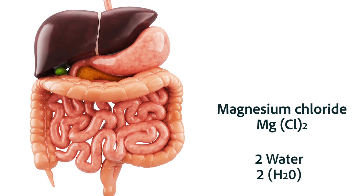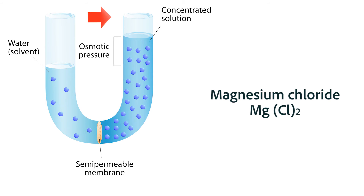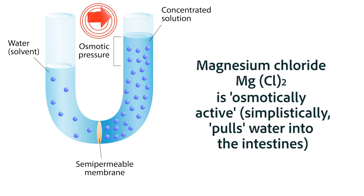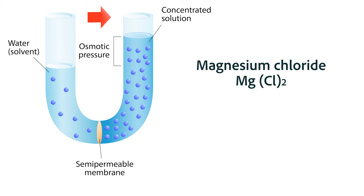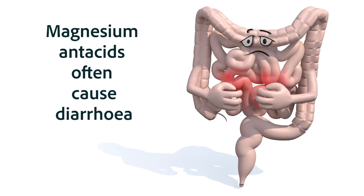From that, you would think there are going to be no side effects, but we have already identified a few in the previous lesson. The magnesium chloride is what we call an osmotically active particle — it has the ability to pull water into the intestines. If there's more fluid coming into the intestines, there'll be more water all the way through the gastrointestinal tract, resulting in diarrhea. Magnesium antacids often cause diarrhea because they result in an osmotically active particle pulling water into the lumen of the gastrointestinal tract.